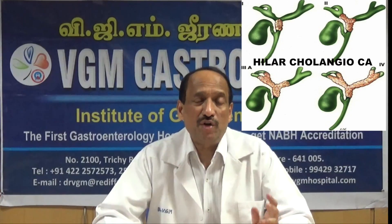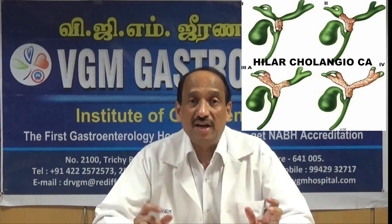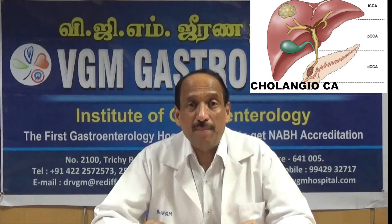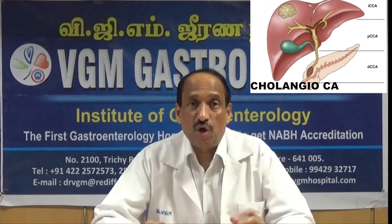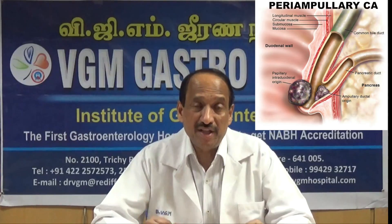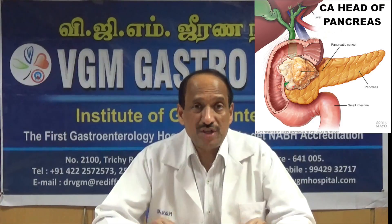Not only for gallstones, but many other conditions are helped by ERCP. One example is hilar cholangiocarcinoma, also known as Klatskin tumor — cancer of the bile ducts occurring at the trijunction where the left and right hepatic ducts meet the common hepatic duct. It can also occur anywhere in the common bile duct. Additionally, cancer at the ampulla of Vater or at the head of the pancreas can all produce bile duct obstruction and can be addressed via ERCP.